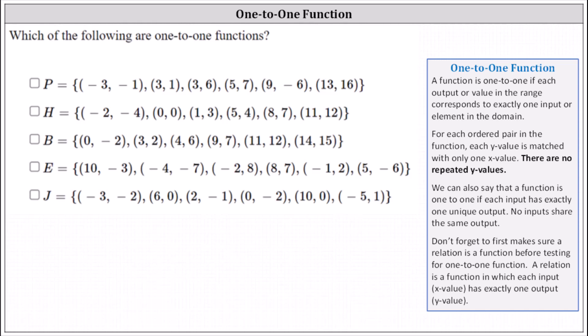Which of the following sets of ordered pairs are one-to-one functions? A function is one-to-one if each output or value in the range corresponds to exactly one input or element in the domain. For each ordered pair in the function, every y value is matched with only one x value, which means there are no y values repeated. We can also say that a function is one-to-one if each input has exactly one unique output, meaning no inputs share the same output.